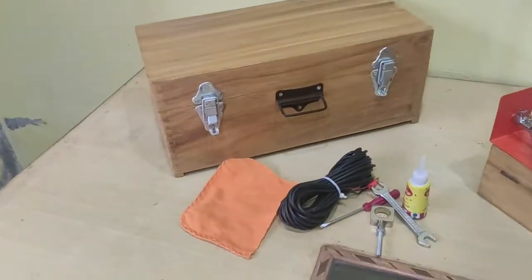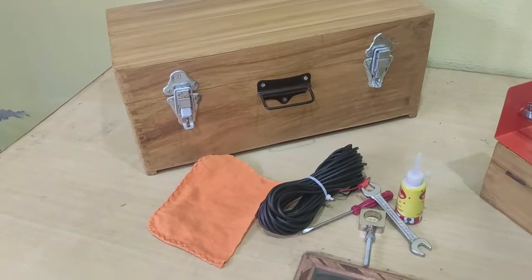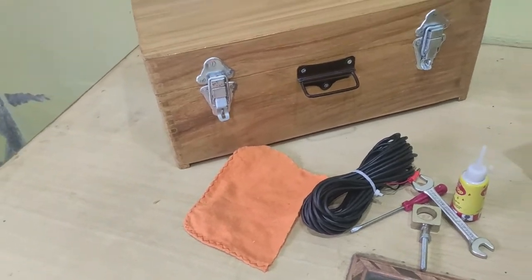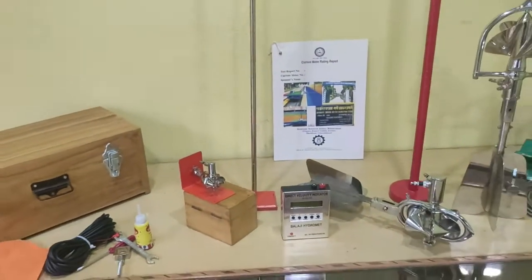These are the accessories that come with this water current meter. This is the holder, printer, spinner, and the oil and connection cable, and a cloth for cleansing all the instruments.